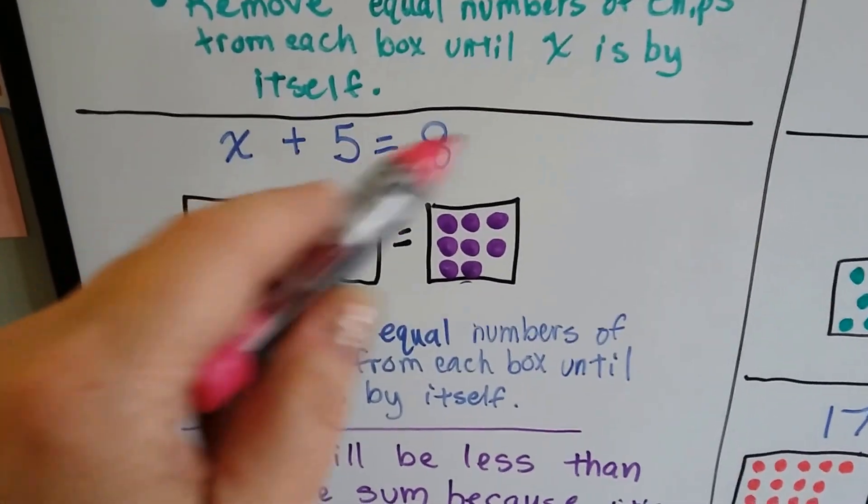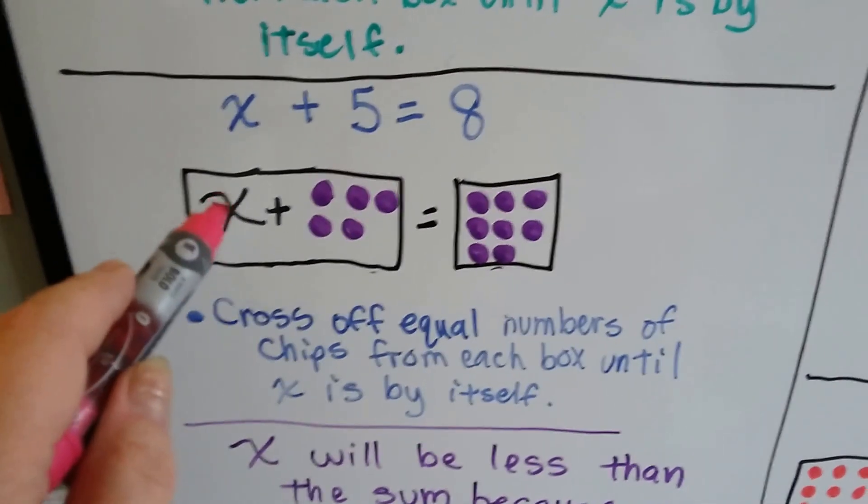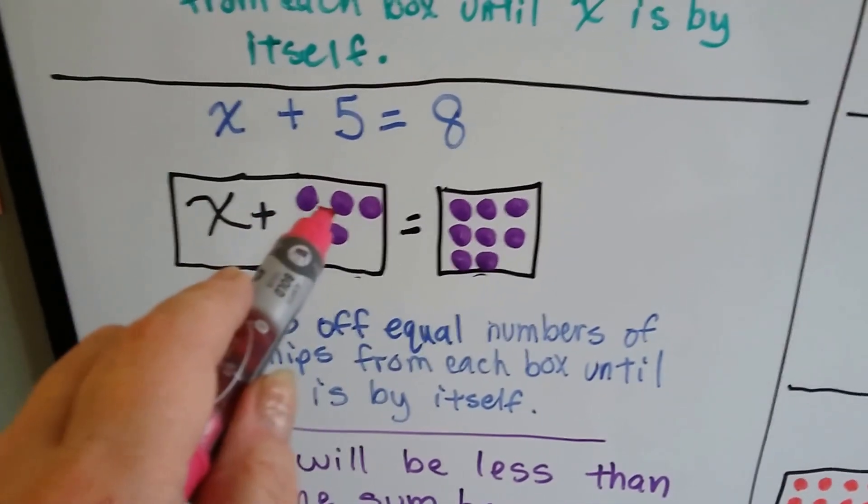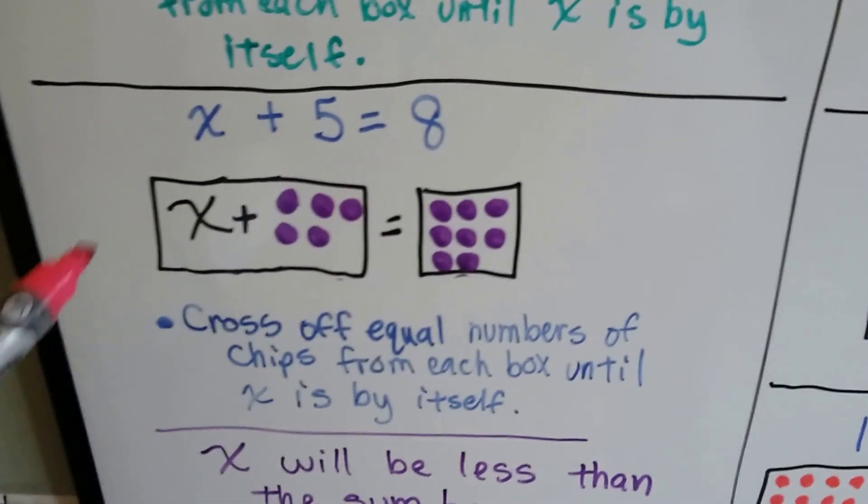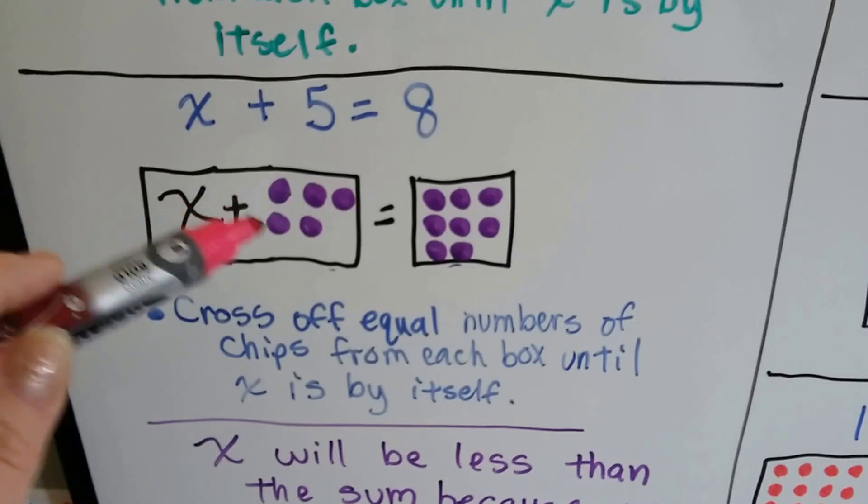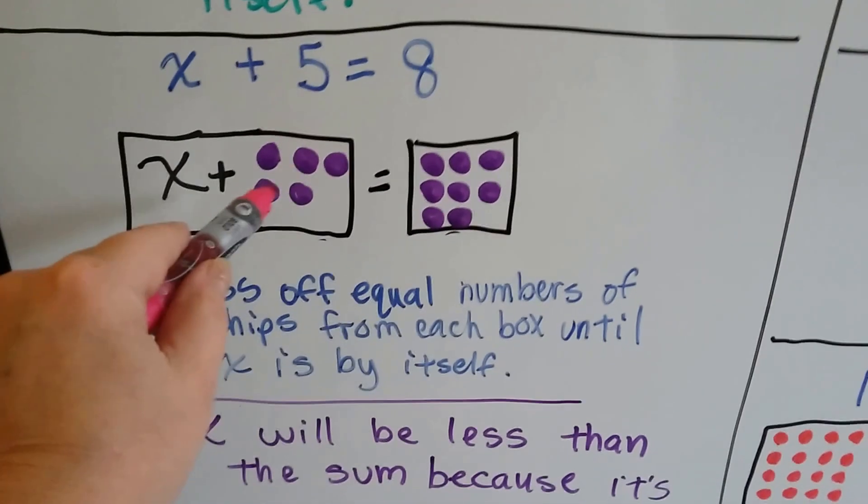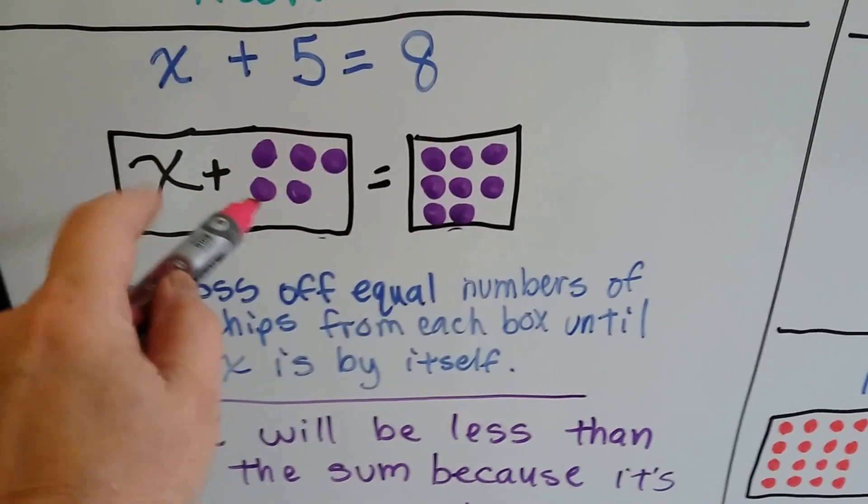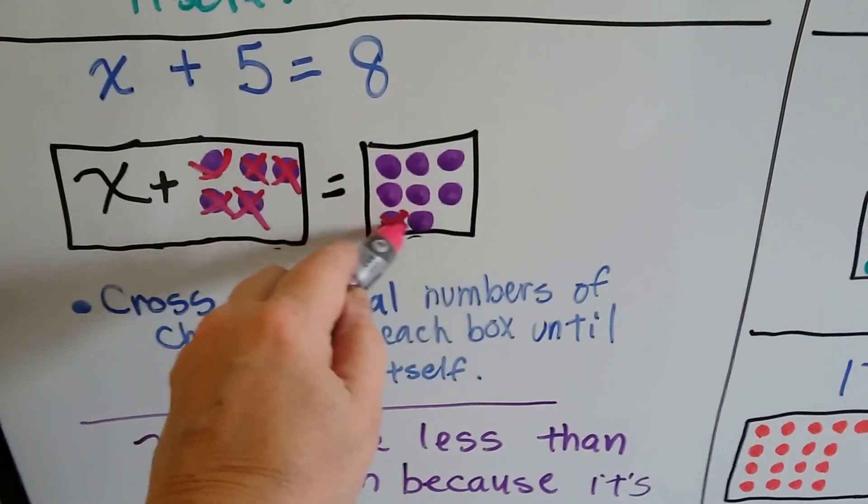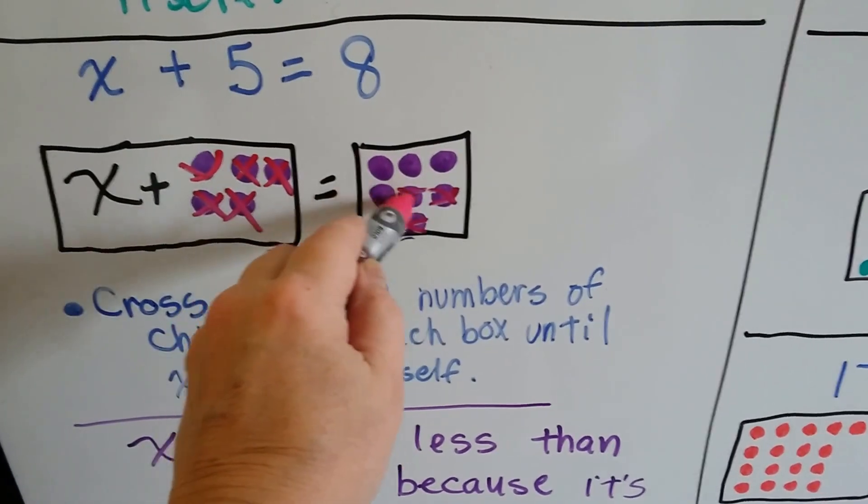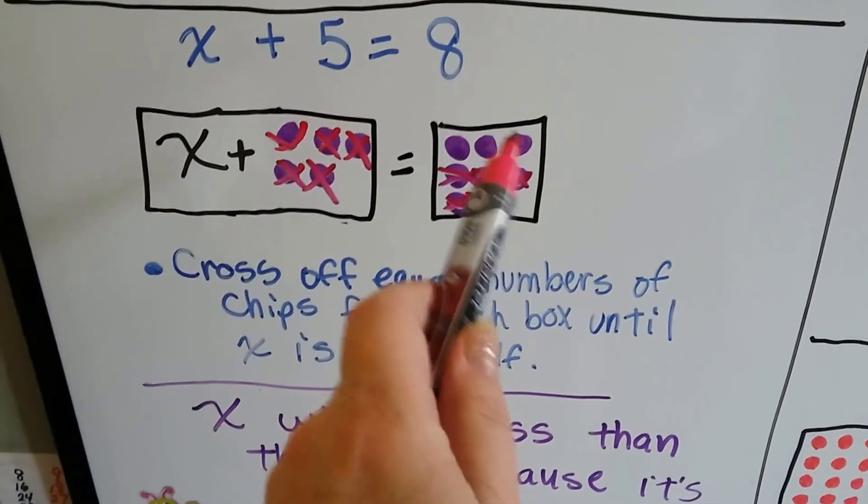x plus 5 equals 8. Now the x is first, but it's okay. In our box we've got x plus the 5 chips and then we've got the 8. What we do is we cross off equal numbers of chips from each box until the x is by itself. So we're going to cross off all these 5 and cross off 5 from this one. So we can see that x equals 3 because that's all that's left.